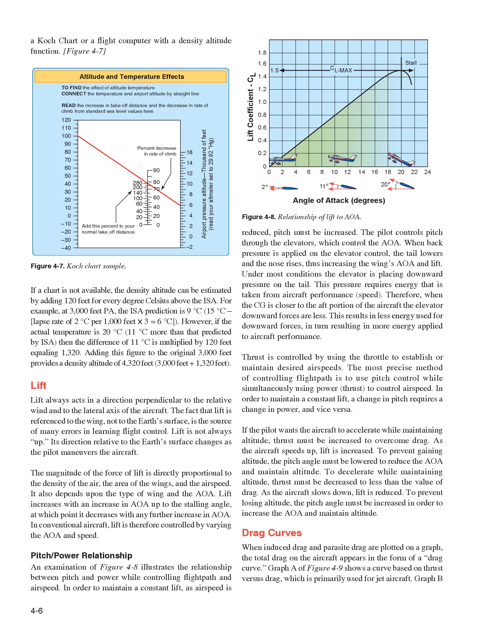The pilot controls pitch through the elevators, which control the AOA. When back pressure is applied on the elevator control, the tail lowers and the nose rises, thus increasing the wing's AOA and lift. Under most conditions the elevator is placing downward pressure on the tail. This pressure requires energy that is taken from aircraft performance speed. Therefore, when the CG is closer to the aft portion of the aircraft, the elevator downward forces are less, resulting in less energy used for downward forces and more energy applied to aircraft performance.